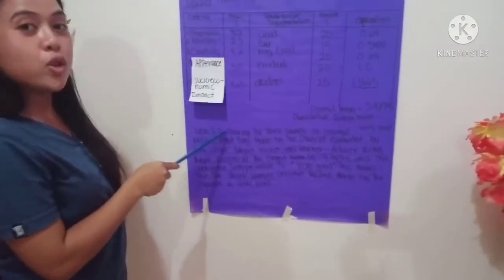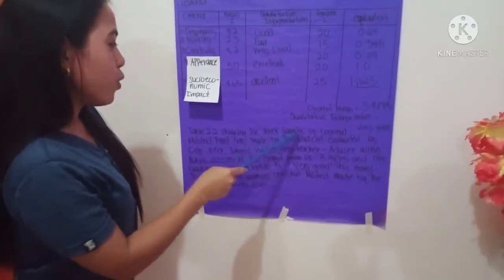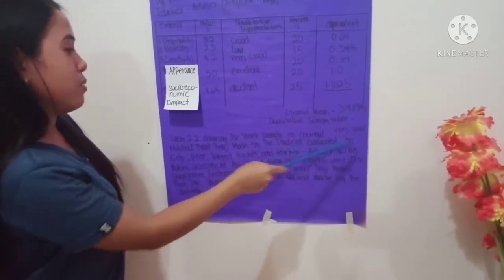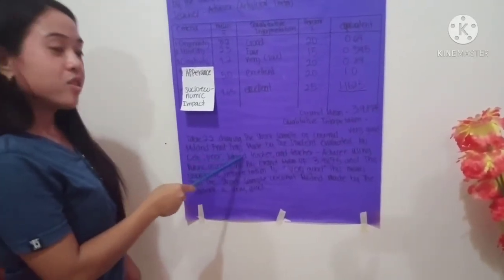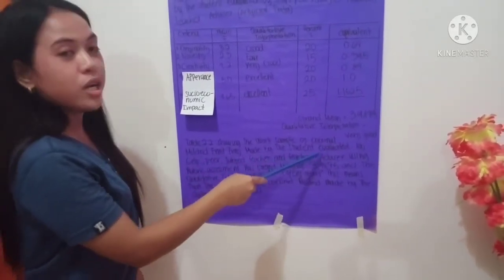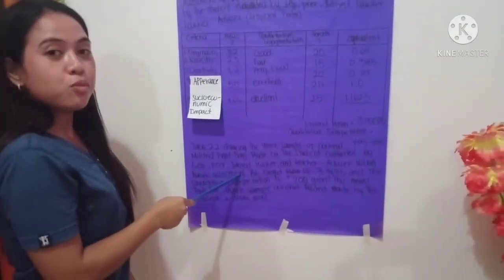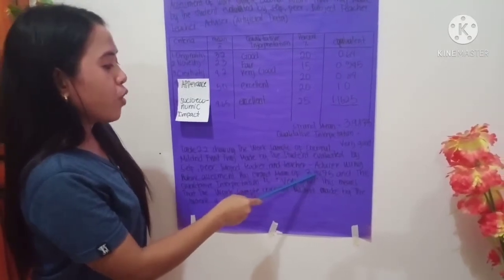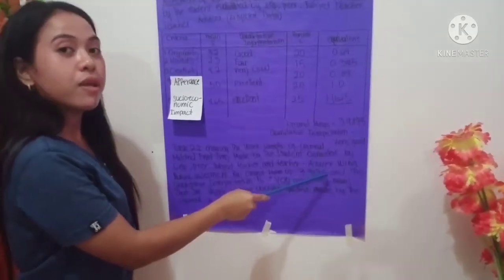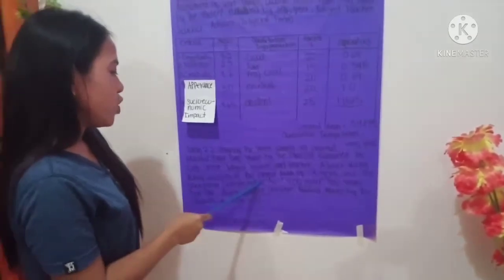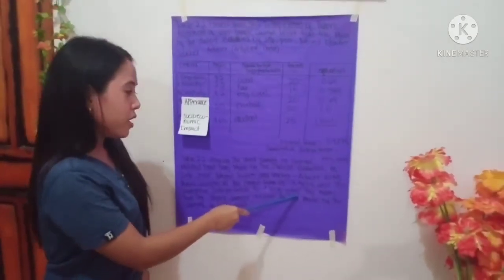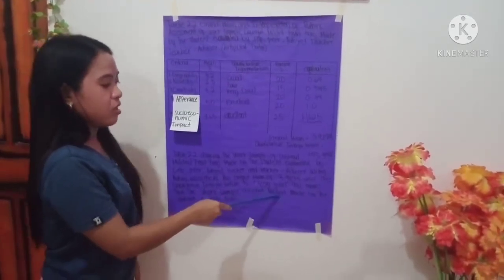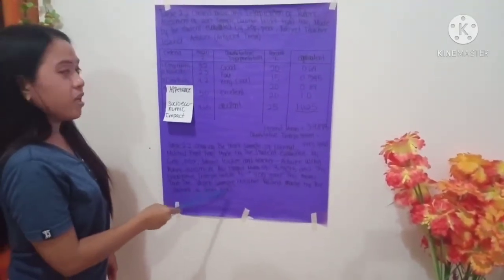Table 2.2 shows the work sample of coconut mildred fruit tray by the student, evaluated by self, peer, subject teachers, and teacher advisors using rubric assessment, with a grand mean of 3.9875. The qualitative interpretation is very good. This means the work sample coconut mildred made by the student is very good.